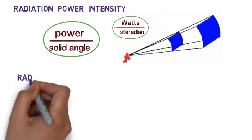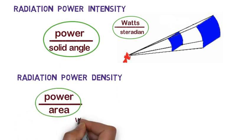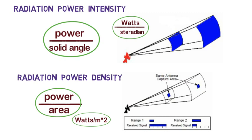On the other hand, radiation power density is the strength of the radiated wave at a given distance and it is given by power per unit area. Its value decreases as the distance from antenna increases.